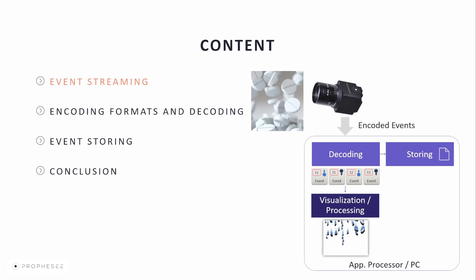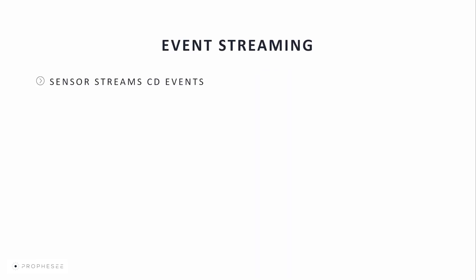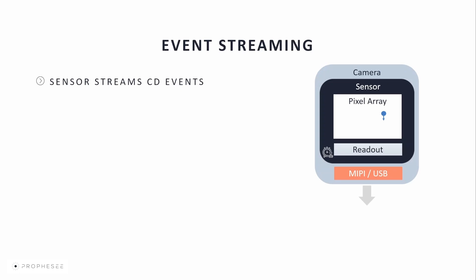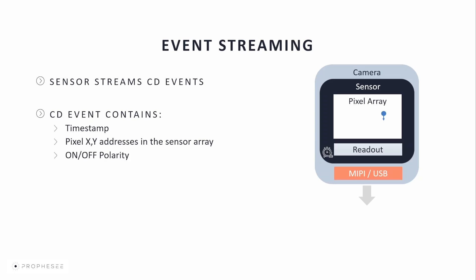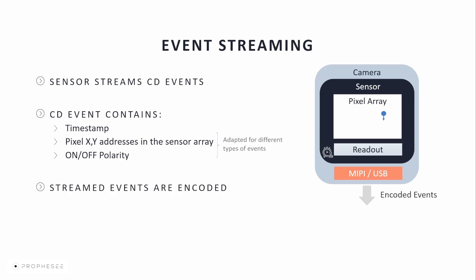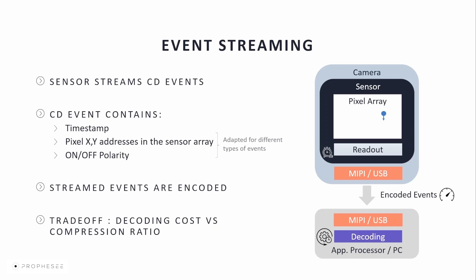Let's start with the event streaming. Prophecy event-based sensors stream change detection events, or CD events. Each CD event contains a timestamp, the pixel's X and Y addresses within the sensor array, and the contrast detection polarity — on or off. The last two can be adapted for different types of data that will be discussed later. The sensor produces data in a proprietary stream format we call EVT. The event formats have been designed to strike a balance between compactness and robustness while taking into account constraints imposed by processing platforms.